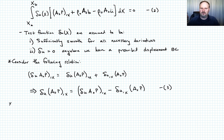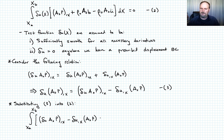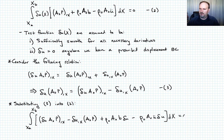Substituting Equation 3 into Equation 2, the integral from x_a to x_b becomes: [δu · A₀P],x minus δu,x · A₀P, plus ρ₀A₀b · δu, minus ρ₀A₀ü · δu, all integrated dx = 0. Call that Equation 4.